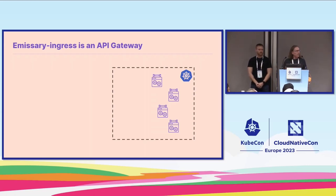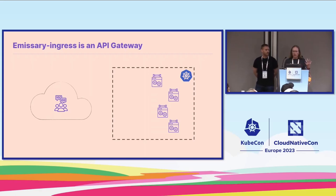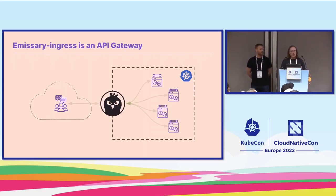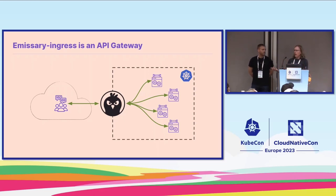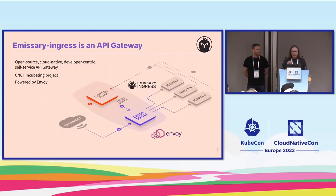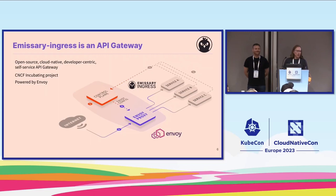That means you've got your Kubernetes cluster, you have users out somewhere on the internet, and Emissary's function is to sit between those two and provide access for people out in the world to interact with services in your cluster. It is an open-source, cloud-native, developer-centric, opinionated, self-service API gateway.